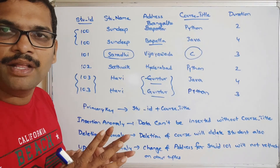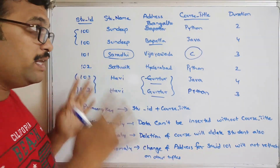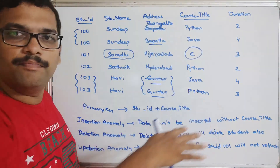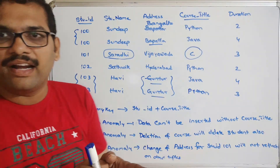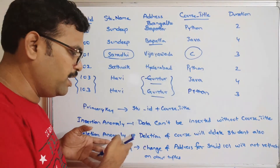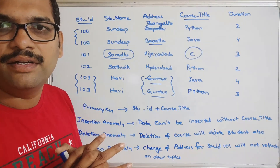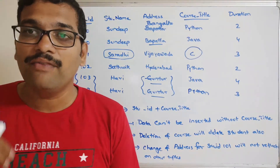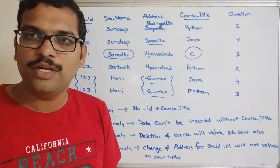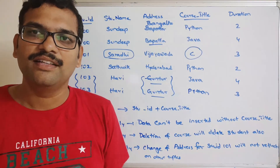To overcome these anomalies — which are faults occurring because of poor design — we move to normalization, where we split this complete table and relate the sub-tables to avoid insertion, deletion, and updation anomalies. If you have any doubts, post them in the comment section. If you enjoyed the session, like, share, and subscribe. Thanks for watching.